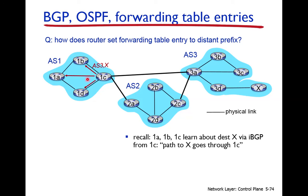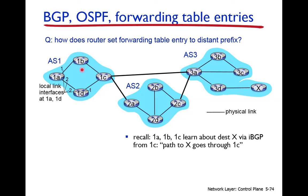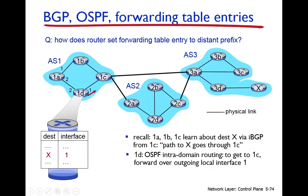Now we also have an intra-autonomous system routing protocol used for reachability within a single autonomous system. This can be OSPF, a link state routing protocol, or a distance vector routing protocol. These intra-autonomous system routing protocols build the forwarding table to reach from one router to another router within the same autonomous system.